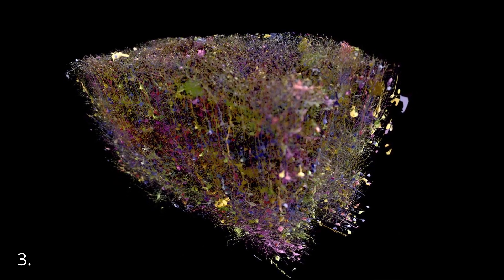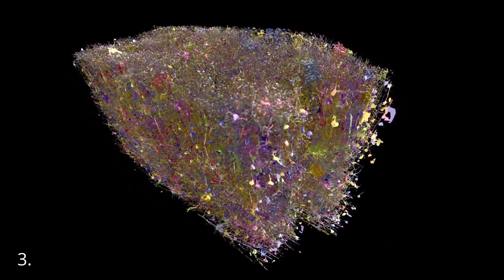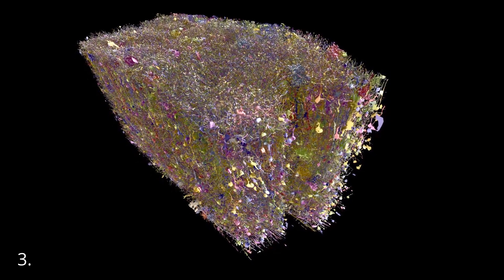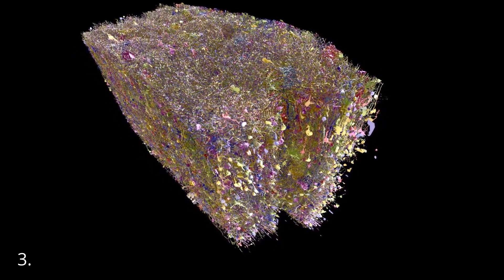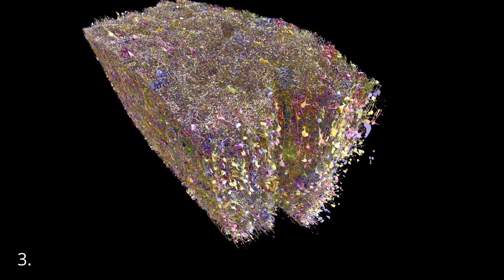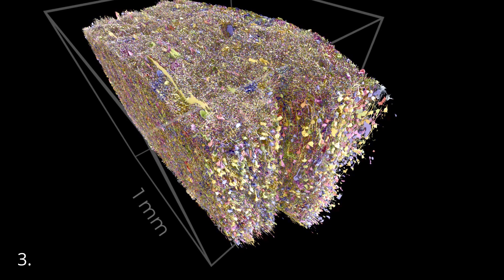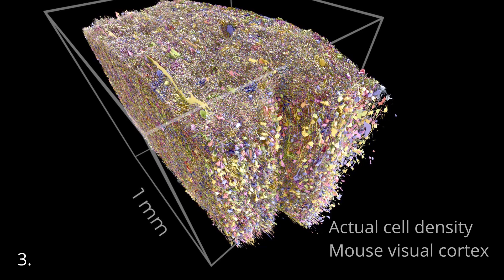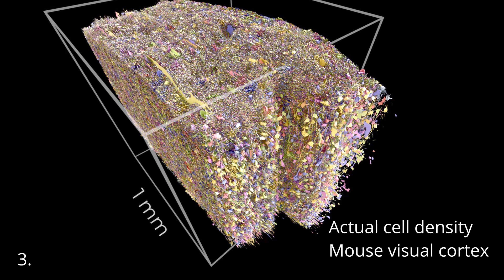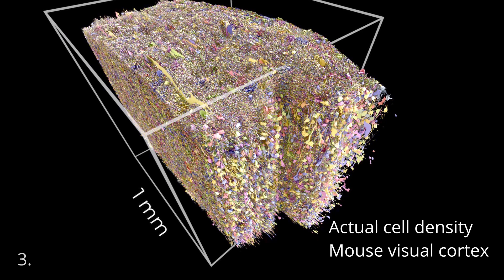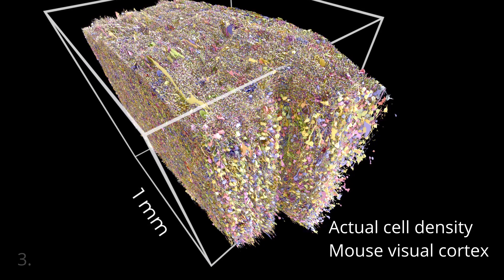In real brains, neurons and their branching fibers are packed together densely like tree roots beneath the forest floor. One cubic millimeter, a volume the size of a coarse grain of salt, can contain well over 75,000 neurons and a half a billion connections between them.